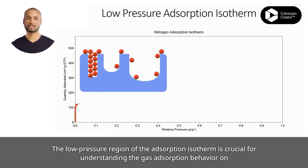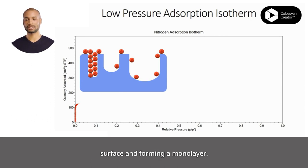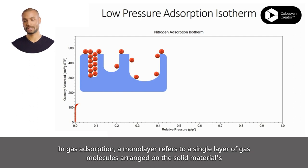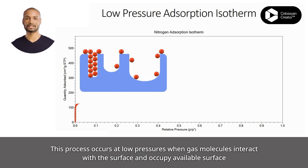The low-pressure region of the adsorption isotherm is crucial for understanding the gas adsorption behavior on a solid surface. This region represents the initial stages of adsorption, where gas molecules begin interacting with the surface and forming a monolayer. In the low-pressure regime, the adsorption isotherm exhibits a linear relationship between the amount of gas adsorbed and the pressure.